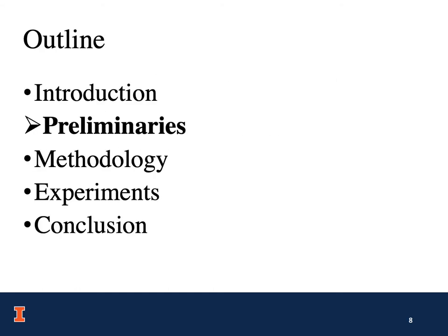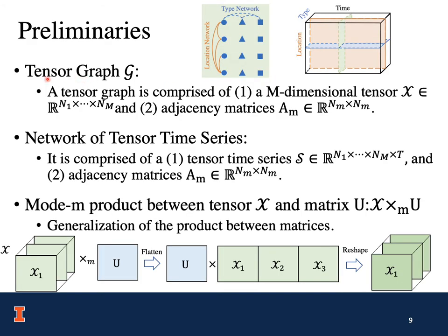Now let me introduce some useful concepts in preliminaries. First, tensor graph: it is comprised of an M-dimensional tensor X, and each of its dimensions is associated with an adjacency matrix. Second, network of tensor time series: it is comprised of a tensor time series, and each of its dimensions is also associated with an adjacency matrix. Third, the mode product between tensor X and matrix U: it is a generalization of the product between matrices. We first flatten the tensor X into a matrix along the m-th dimension, then apply the matrix-matrix product, and finally reshape the results back to a tensor.